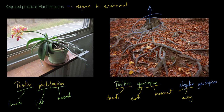These roots are also showing negative phototropism, which means they are moving away from the light. If a root is up in the light, it's not in the soil doing its job. So plants have negative phototropism in their roots to get the roots to turn down into the soil and start drawing nutrients and water from the ground.